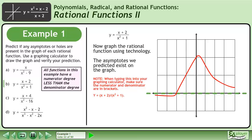Now graph the rational function using technology. The asymptotes we predicted exist on the graph. When typing this into your graphing calculator, make sure the numerator and denominator are in brackets.